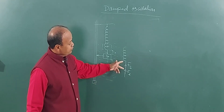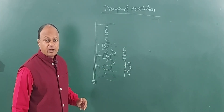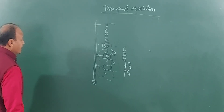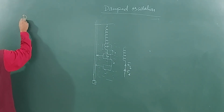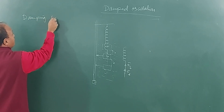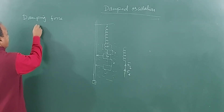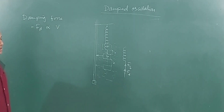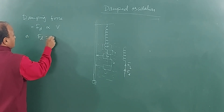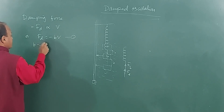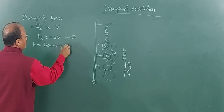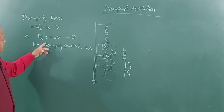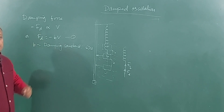These two forces together produce the necessary damping or loss of energy in the oscillations of the block. The damping force is given by Stokes' law: Fd is directly proportional to velocity, or Fd equals minus b times v, where b is called the damping constant. B is always positive, and this negative sign means the force is opposite to the direction of velocity.